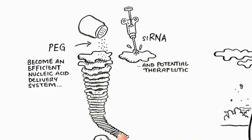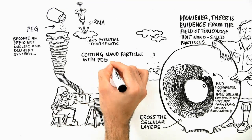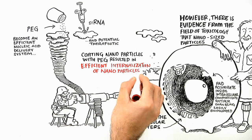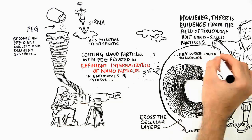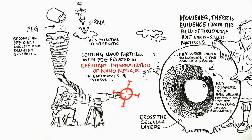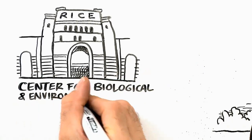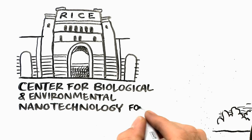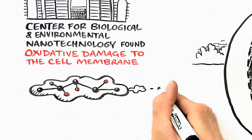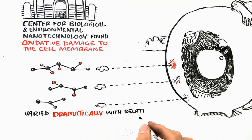In 2006, Dr. Shana and his team showed that coating nanoparticles with PEG resulted in efficient internalization of nanoparticles in endosomes and cytosol, and they were found to localize in the nuclear region. Indeed, the coating of nanoparticles can be utilized for targeting. However, researchers at the Center for Biological and Environmental Nanotechnology at Rice University have found that oxidative damage to cell membranes varied dramatically with relatively minor changes to nanoparticle structure.